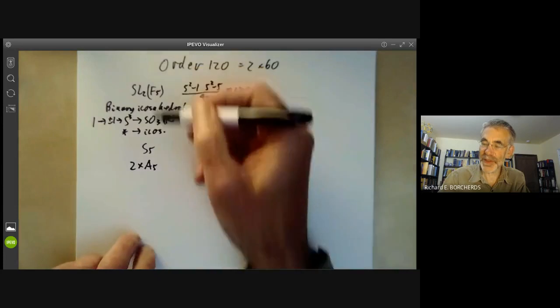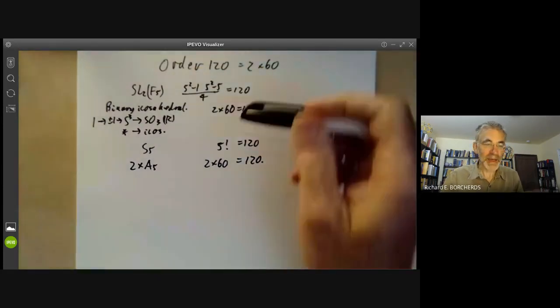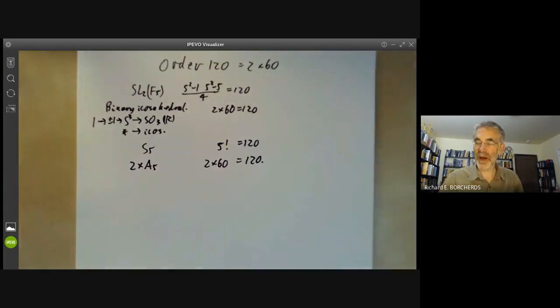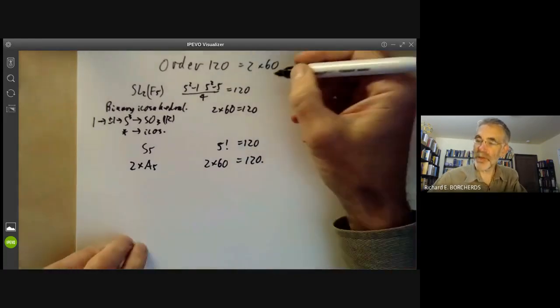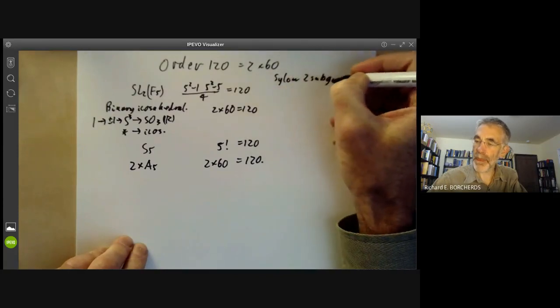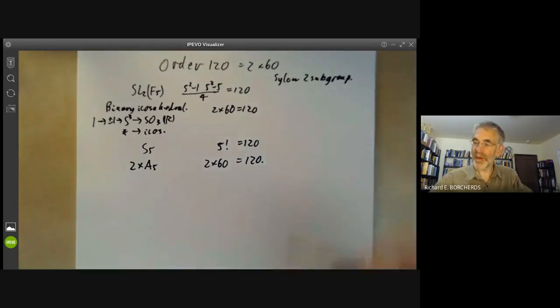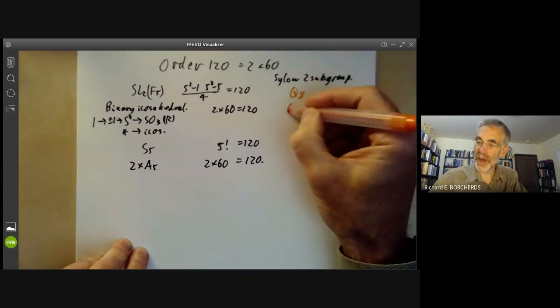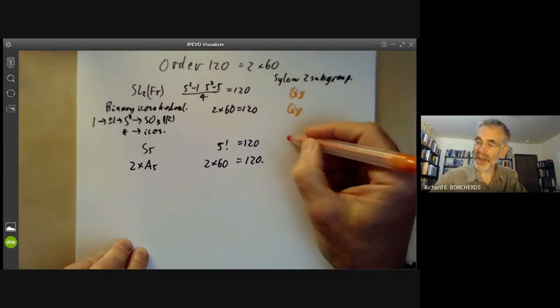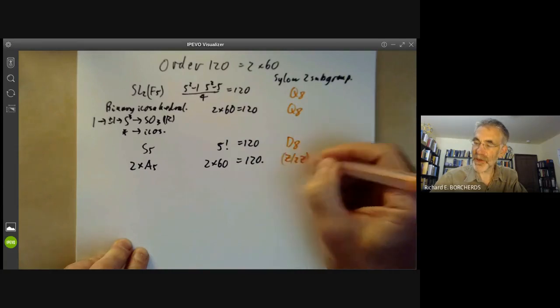So we've got four groups of order 120 and we can ask which of them are isomorphic to each other. Well one way to sort them out is to look at the Sylow 2 subgroup. So if we work out the Sylow 2 subgroup of these we find here it's the quaternion group, here it's the quaternion group, here it's the dihedral group of order 8 and here it's a product of three groups of order 2.